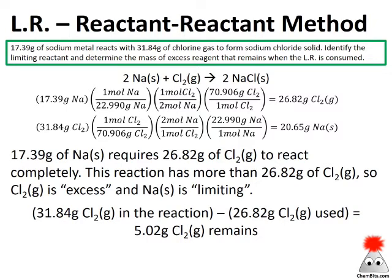We still haven't completely answered the question. With sodium as the limiting reagent and chlorine as the excess reagent, this is why we used the reactant-reactant method — because I need this number. I put 31.84 grams of chlorine into the reaction, and when all the sodium is consumed, 26.82 grams of chlorine will have been used. Subtracting those gives 5.02 grams of chlorine gas remaining. That answers all the parts: I've identified the limiting reactant and determined the mass of excess reagent remaining.